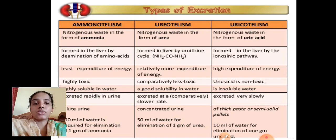Based on the type of excretory products the animals excrete from the body, the animals are classified into three forms: ammonotelism, ureotelism, and uricotelism.